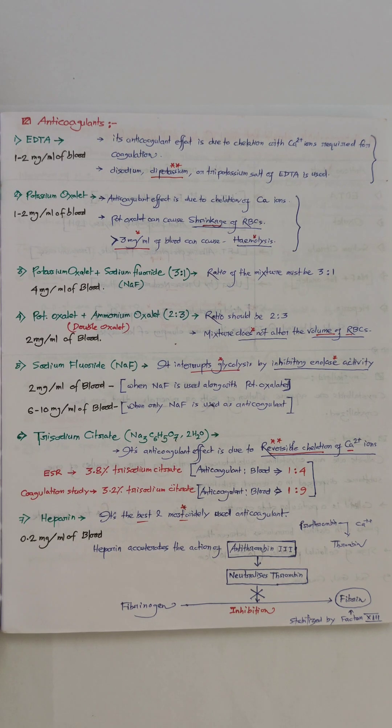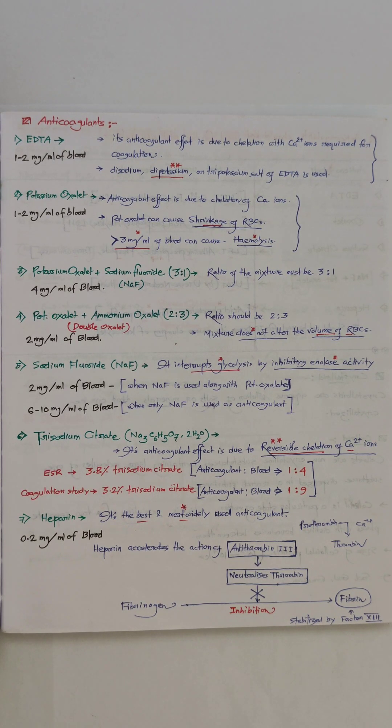Number two, potassium oxalate. Its required quantity is the same as EDTA. Its mode of action is the same as EDTA. But here is one point: potassium oxalate can cause shrinkage of RBCs and greater than 3 mg per ml of blood can cause hemolysis.